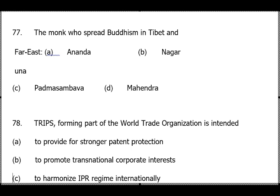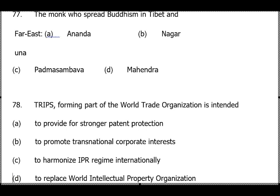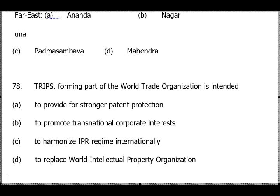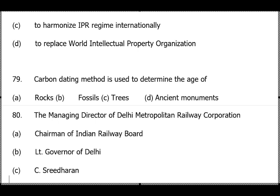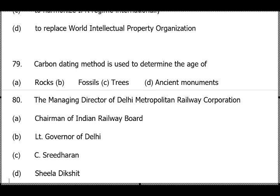Question 78: TRIPS — you will study Intellectual Property Rights (IPR) in CLAT legal reasoning. IPR covers copyright, trademark, geographical indication, patents. TRIPS was basically for setting up the IPR framework — answer is option C. Also know the Vienna Convention (for diplomatic relations and diplomatic immunity) and patent limits: maximum 20 years. Question 79: Carbon dating — answer is fossils, option B.